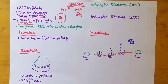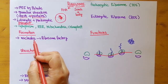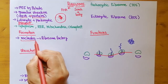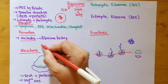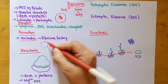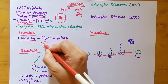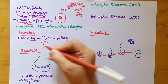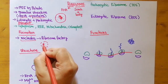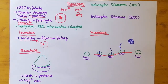Now, the formation of ribosomes — how and where are ribosomes produced? The factory of ribosomes is the nucleolus. In the nucleus, there is a dark structure present, and that dark place is known as the nucleolus.